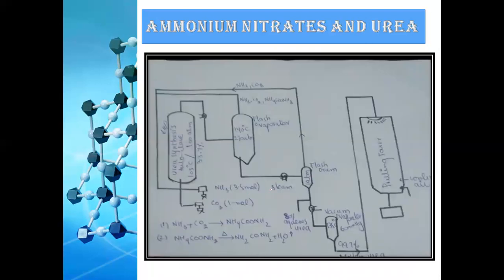This is the flowsheet diagram for urea production. Three moles of ammonia and one mole of carbon dioxide react in the first reactor, yielding 33.7% urea. Then it enters a flash drum where unreacted ammonia, carbon dioxide, and ammonium carbamate are separated and recycled back into the reactor. This recycling process continues through subsequent reactors at reduced pressure to increase yield.